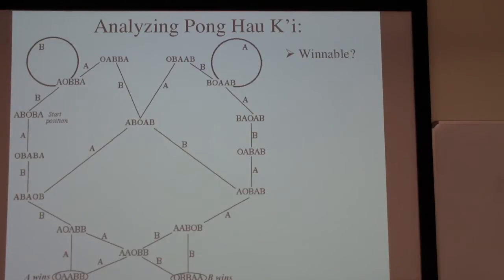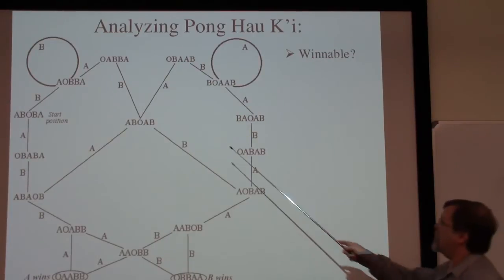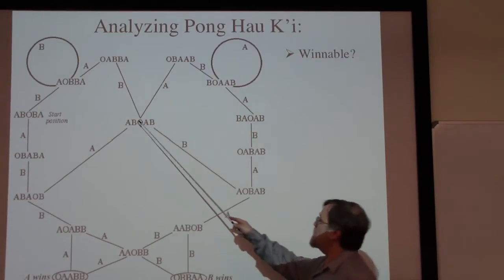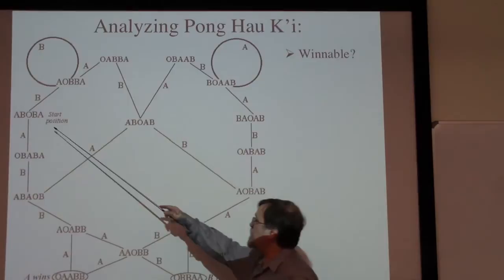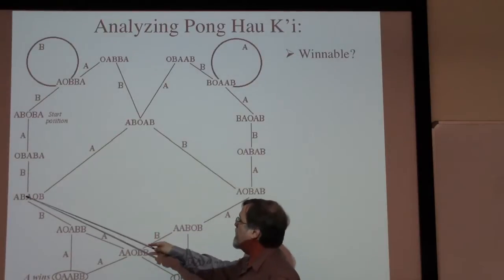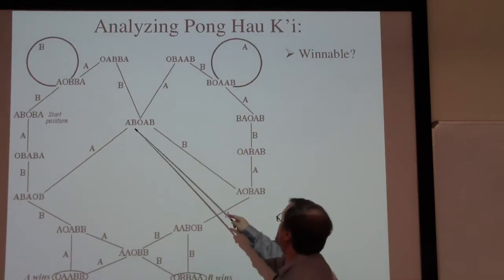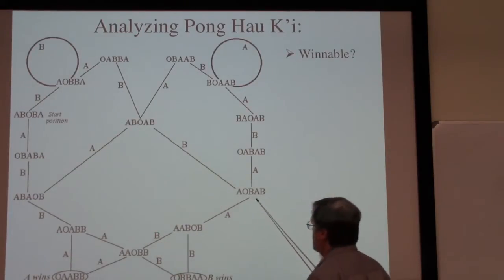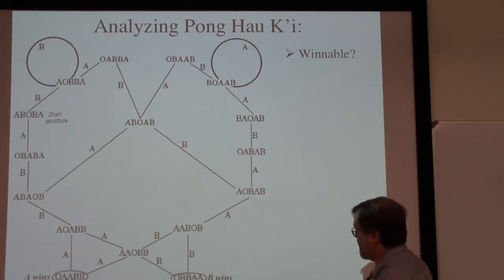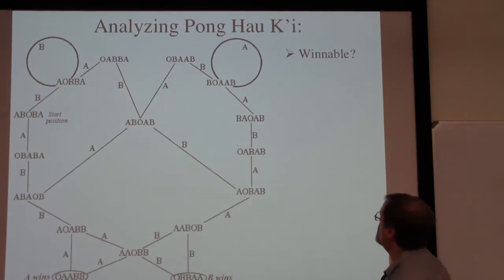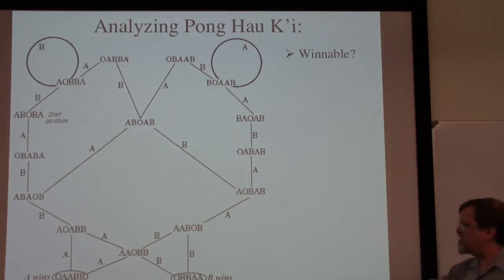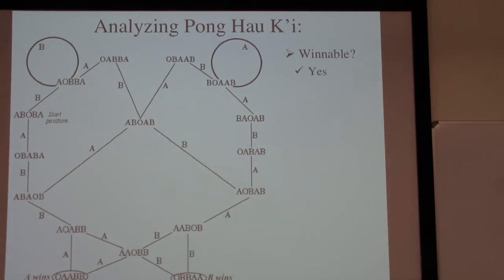One question is: is it winnable? Certainly there are ways of going A, B, A, B, A, B and B would win. The existence of those circled states pretty much tells us that it will be winnable.